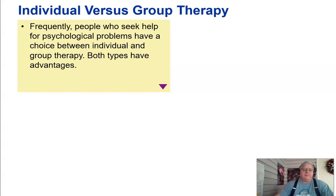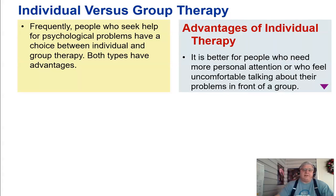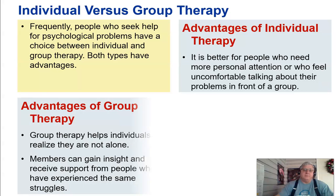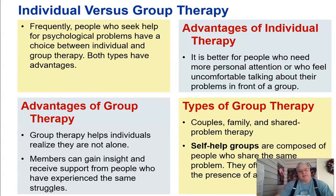Individual versus group therapy: people who seek help for psychological problems often have a choice between individual and group therapy, and both types have their advantages. Individual therapy is better for people who need more personal attention or feel uncomfortable talking about problems in front of a group. Group therapy helps individuals realize they are not alone, and members can gain insight and support from people who have experienced the same struggles. Types of group therapy include couples, family, and shared-problem therapy. Self-help groups are comprised of people who share the same problems and often meet without a therapist present.